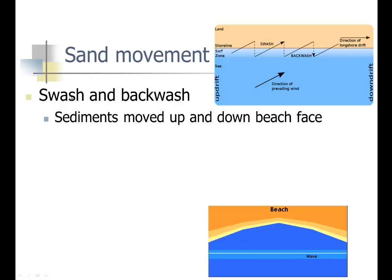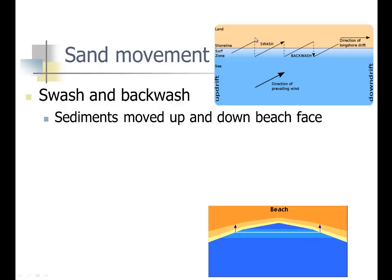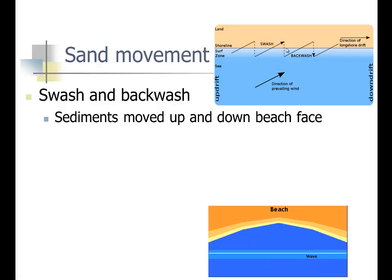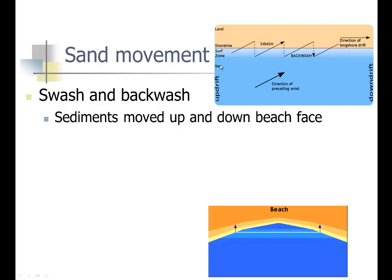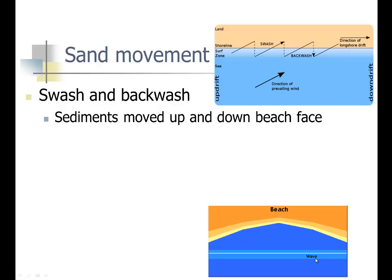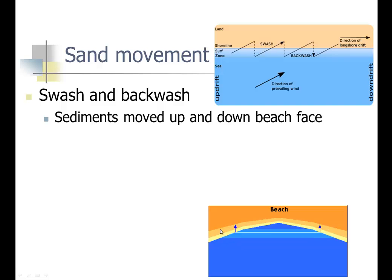Sand movement works by swash and backwash. Swash is when water moves onto land, and backwash is when it goes back into the ocean. Normally storms are not perpendicular or parallel to shores, so waves come in at an angle. That means the swash comes up at an angle, while gravity, which pulls the water back, always takes the shortest route. Sediment moves up and down the beach as a result.